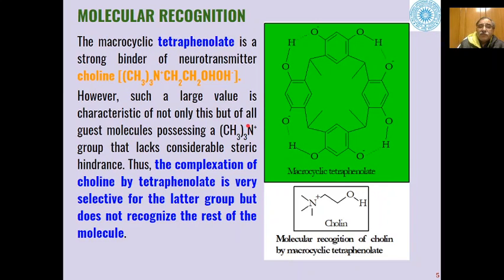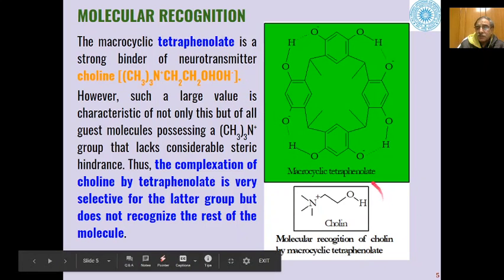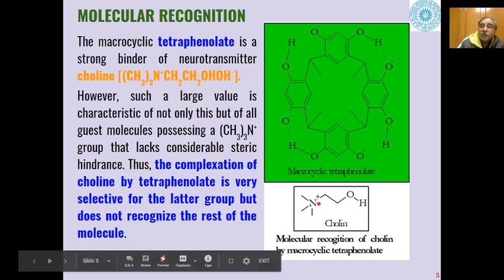Another example of molecular recognition is given by macrocyclic tetra phenolate. Here, hydroxyl groups and phenolate ions have hydrogen bonding with each other. This tetra phenolate is a strong binder of the neurotransmitter choline. In choline, at one end, the hydroxyl group has an electronegative oxygen, and at the other end we have a quaternary ammonium salt.